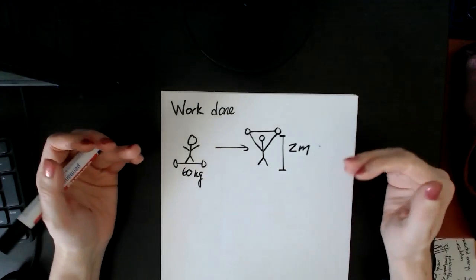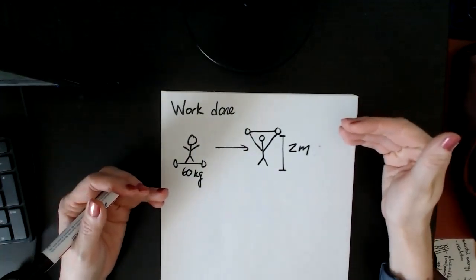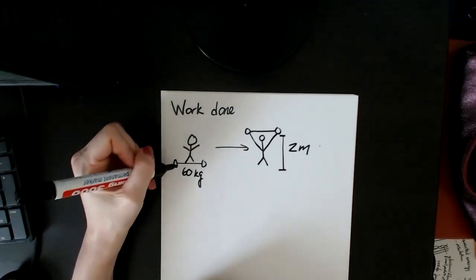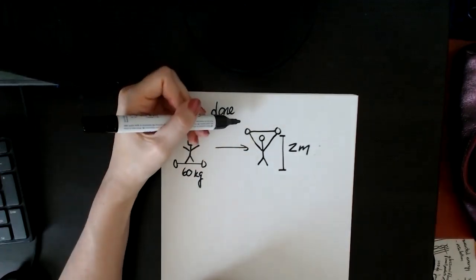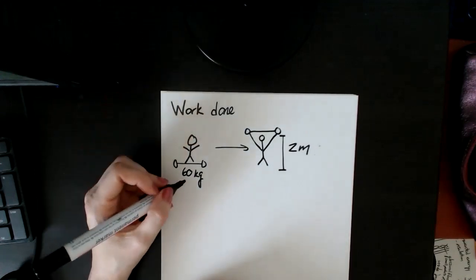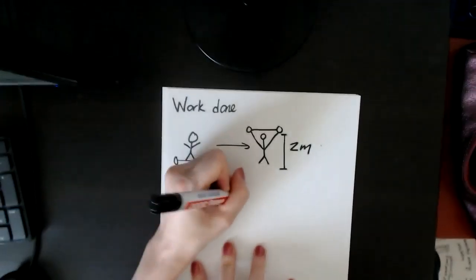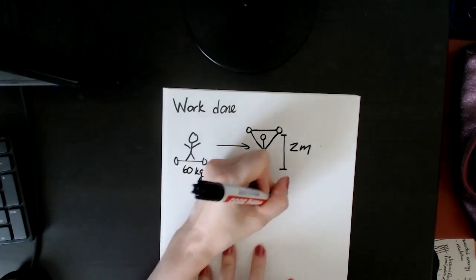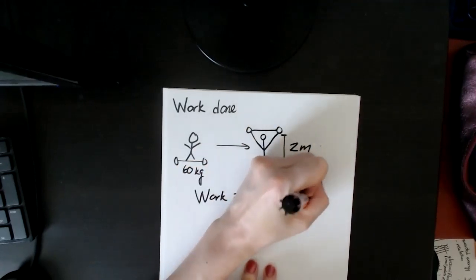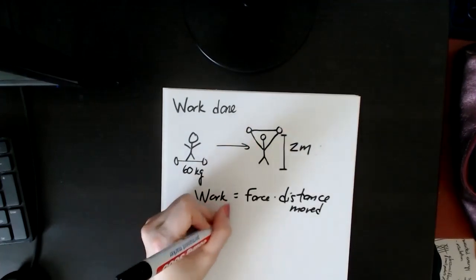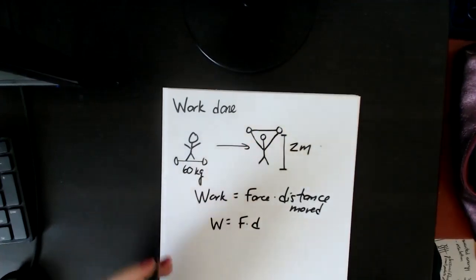So there's two things that have happened here. One is that he has done work. So he has literally done work on this dumbbell to raise it up. How much work he has done is the equation work done equals the force times the distance something has moved. And so we abbreviate that by work equals F times D.